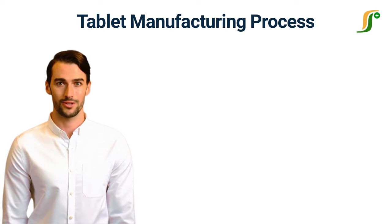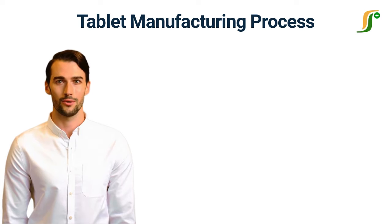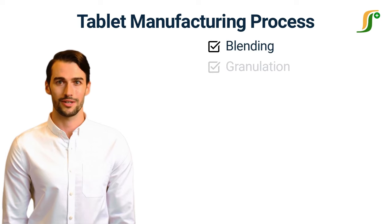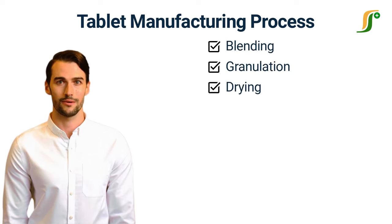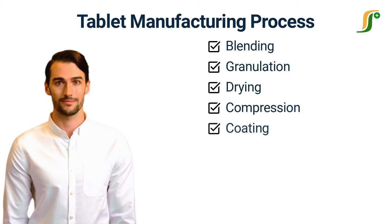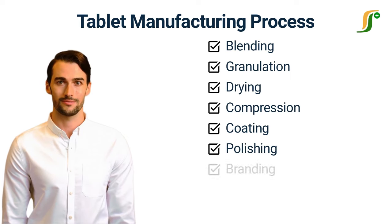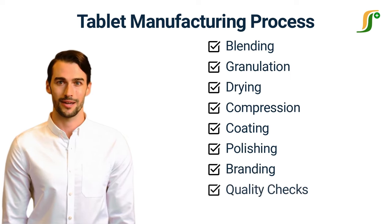The process of tablet manufacturing has several steps. Those include blending, granulation, drying, compression, coating, polishing, branding, quality checks, and packaging.